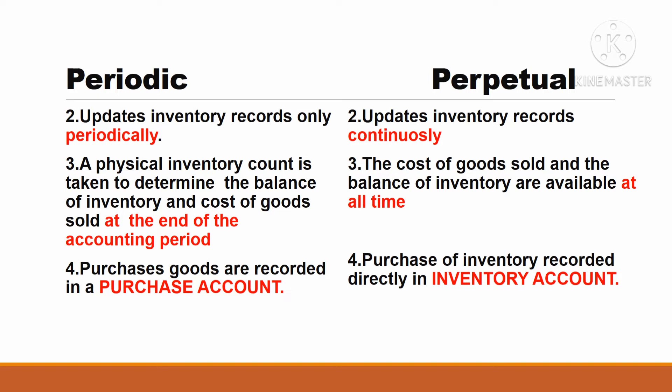Under periodic, number three, a physical inventory count is taken to determine the balance of inventory and cost of goods sold at the end of the accounting period. And under perpetual inventory system, the cost of goods sold and the balance of inventory are available at all times.